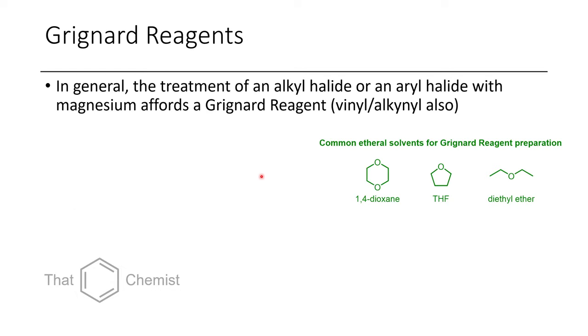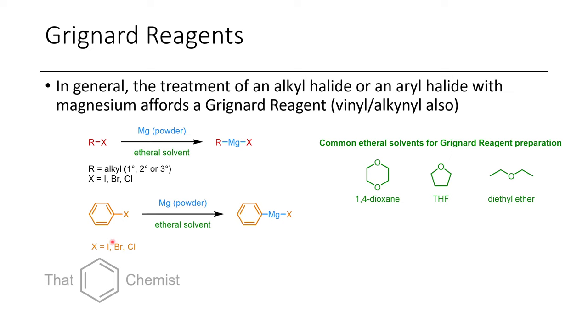So Grignard reagents can react with a number of different carbonyl-containing functional groups, but the way that they're prepared is through the treatment of an alkyl-aryl vinyl or alkyl halide with magnesium powder in an ethereal solvent, producing this, which is known as a Grignard reagent. The most common solvents that are used for this transformation tend to be 1,4-dioxane, THF, or diethyl ether. Sometimes mixtures of these are used, depending on the application.